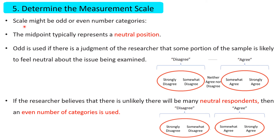The next step is to determine the measurement scale. The scale might have odd or even number categories according to the researcher's judgment. In the case of odd numbers, the midpoint represents a neutral position. In the case of even numbers, there is no neutral position — it may be agree or disagree only. If the researcher judges that some portion of the sample is likely to feel neutral, an odd number category is used, such as three-scale, five-scale, seven-scale, and so on.